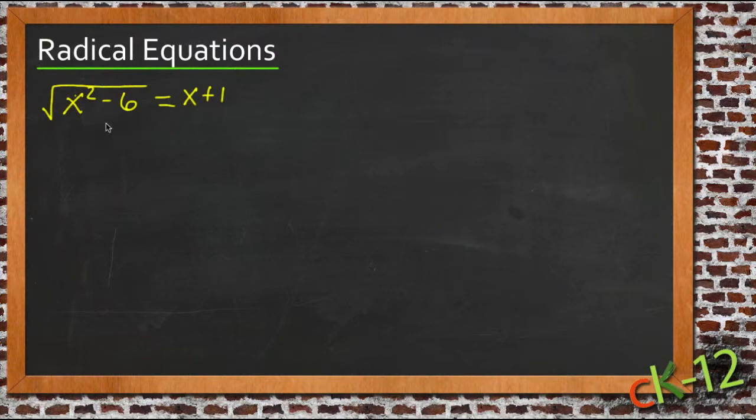Here's an example of a slightly more complicated radical equation. We have variables on both sides here.